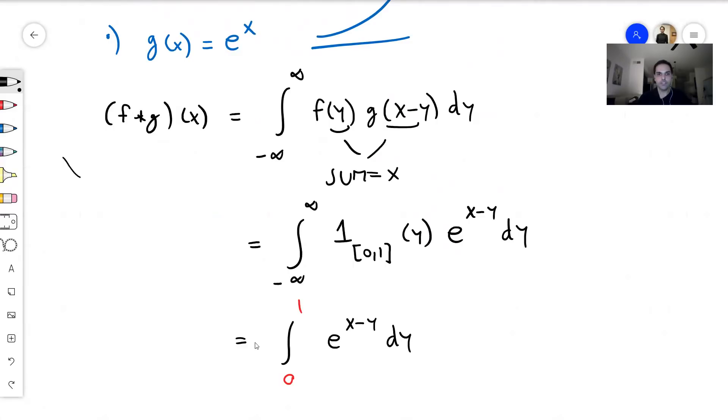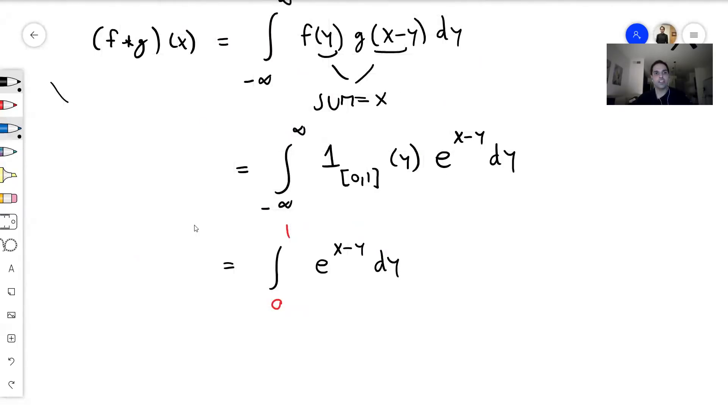And notice the e to the x part doesn't depend on y at all, so it just comes out. And you end up with e^x times the integral from 0 to 1 of e to the minus y dy, which you can calculate.